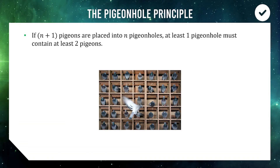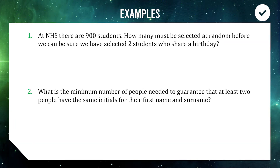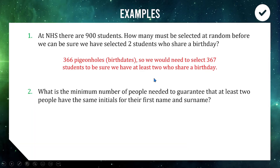It seems very simple but we can apply it to seemingly complicated problems. First example: at Narrow High School there are 900 students. How many students must be selected at random before we can be sure two students share a birthday? If we include February 29, there are 366 possible birth dates, so if we pick 367 students we know — more pigeons than pigeonholes — we'll have at least two who share a birthday.